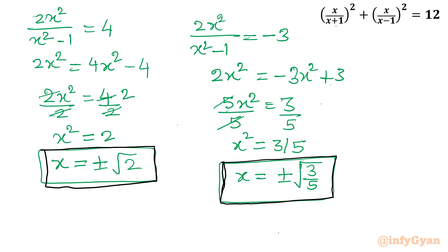So the final answer for this rational equation is x = ±√2 and x = ±√(3/5). If you had not used this algebraic identity and gone by the conventional method, this question would not have been easy. I hope you liked this video — thank you for watching, and don't forget to like, share, and subscribe. Bye bye!